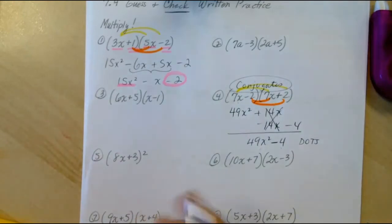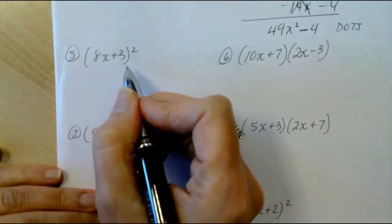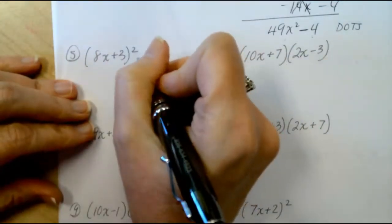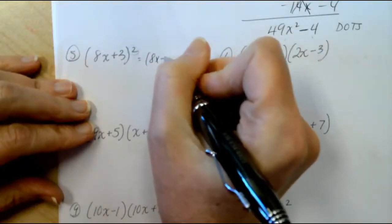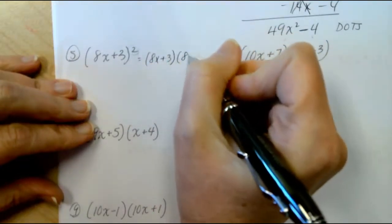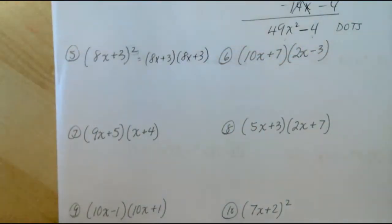Number 5 – let's check number 5. Number 5, not conjugates, but we have a binomial being squared. So remember, 8x plus 3 quantity squared means 8x plus 3 times 8x plus 3. So when we use the distributive property, first take the 8x through.